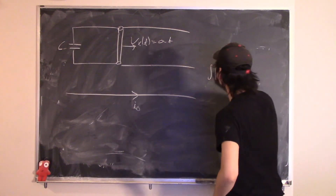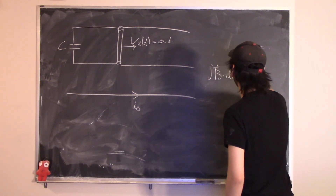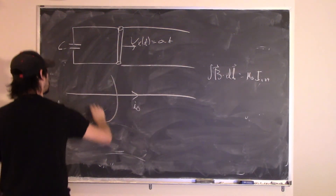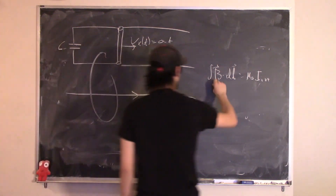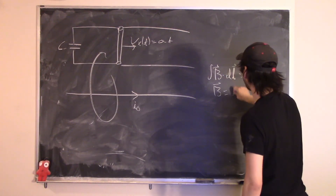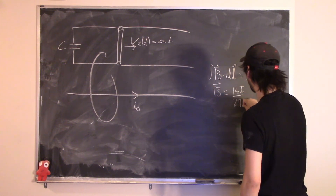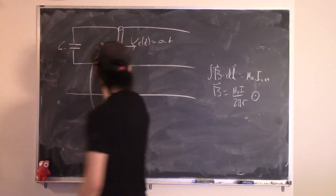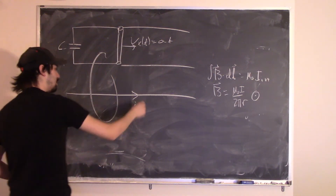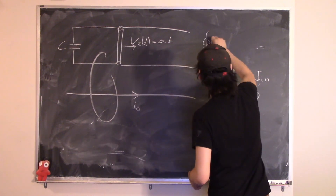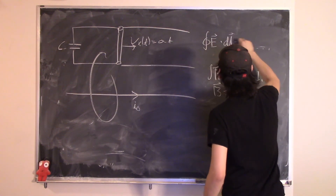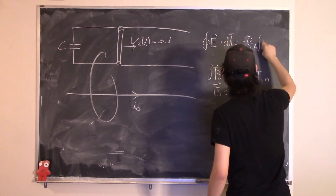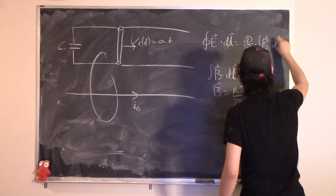Using Ampere's Law: the integral of B dot dL equals mu-naught times I-in. Going around the loop, B equals mu-naught I divided by 2πr pointing out in the region of interest. Then apply Faraday's Law: the integral of E dot dL equals minus partial derivative with respect to time of the integral of B dot dA. We choose dA to point out, so dL goes around in this direction.